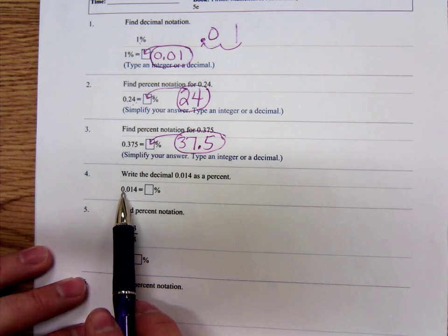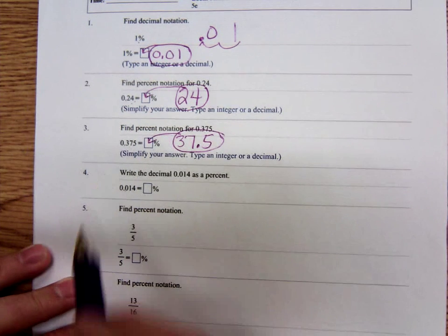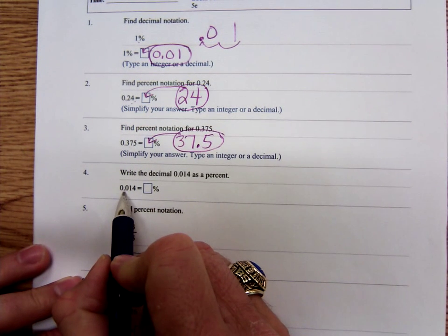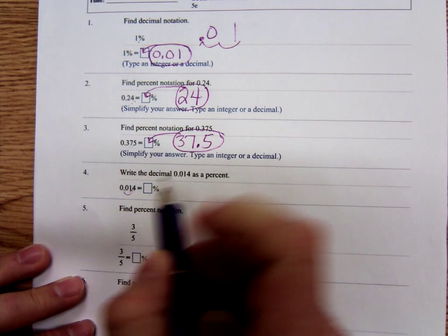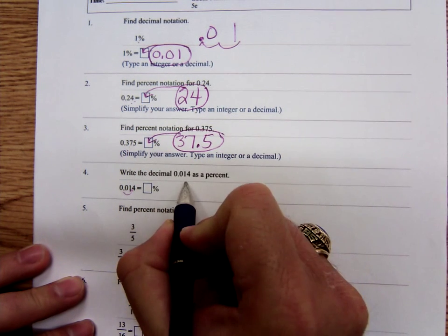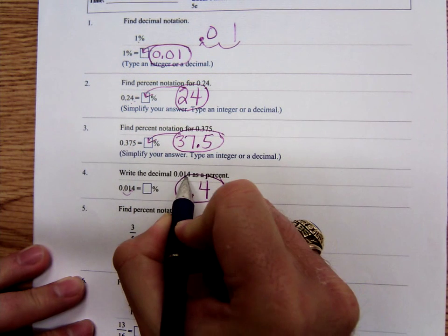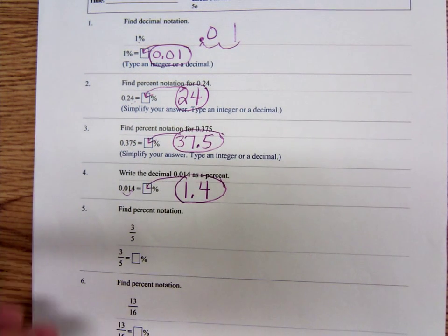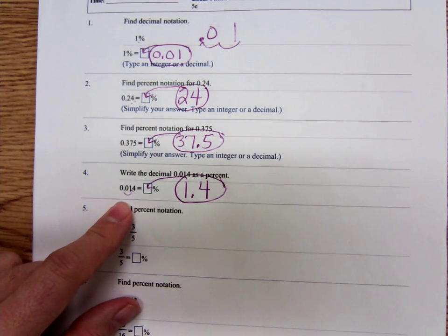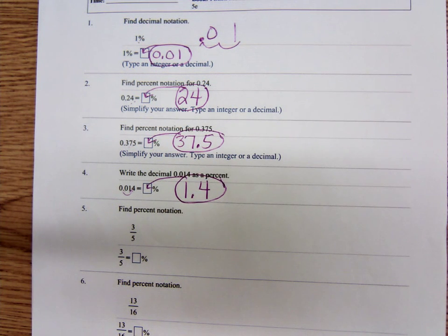Point zero one four, to write that as a percent, you move the decimal point two places. So it's going to be, you type in there, one point four. So point zero one four, it's the same thing as one point four percent.